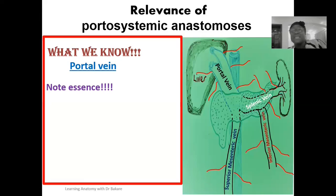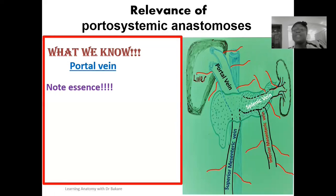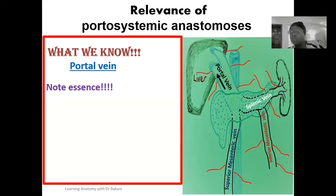These liver products include proteins and other chemical substances that the body needs to function. That is the essence of the portal vein carrying deoxygenated but nutrient-rich blood to the liver. And because this blood is deoxygenated, it is supposed to be transported through the inferior vena cava. But because the blood is rich in nutrients, it is taken from the gastrointestinal tract and directed into the portal vein so that the liver can pick the nutrient content off and use it.